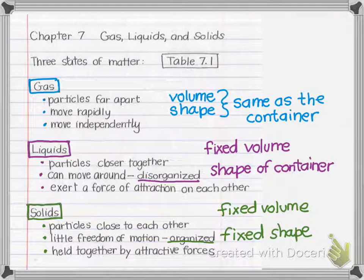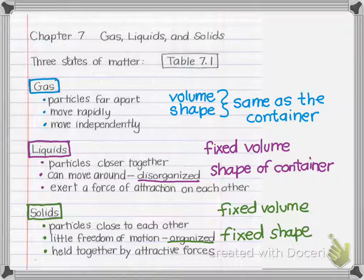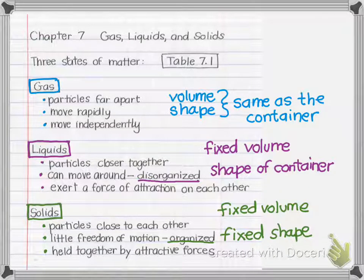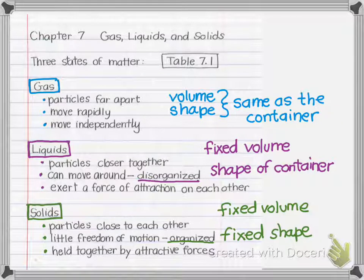In summary: gases expand to fill their container — they're randomly arranged and the particles are very far apart, moving very quickly, which makes the interactions between them negligible. Liquids have a fixed volume and take on the shape of the container. The molecules are randomly arranged but closer together; there is some particle movement and they can still flow past one another.